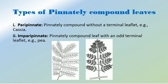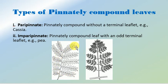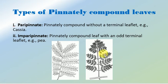All these types are further divided into paripinnate and imparipinnate. In paripinnate, the number of leaflets is always even because the twig is not terminated by a single leaf — two leaflets are always present at the tip, so the number remains even. In imparipinnate, the twig is always terminated by the presence of one leaflet, so the number of leaflets in an imparipinnate leaf is always odd.